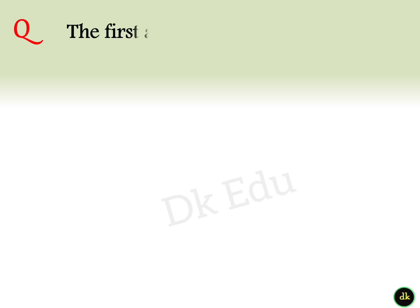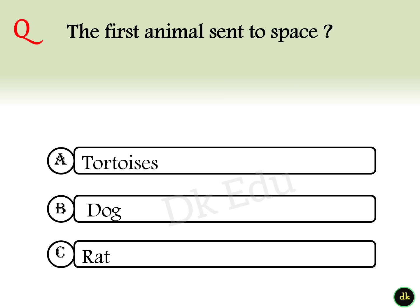32nd question: What was the first animal sent to space? Answer option B: A dog.